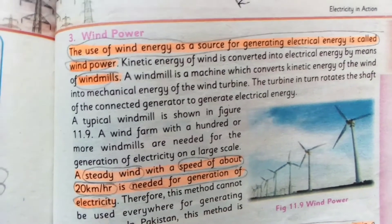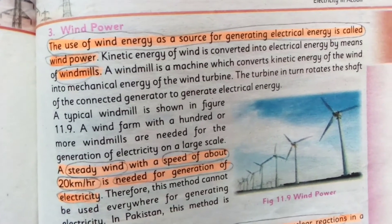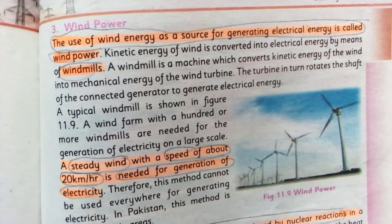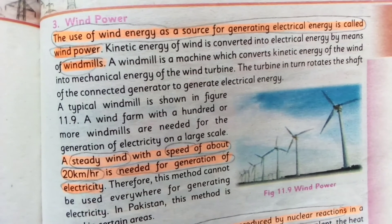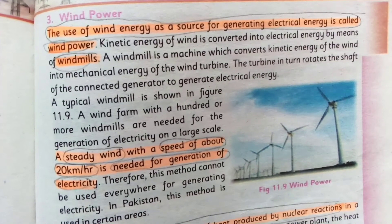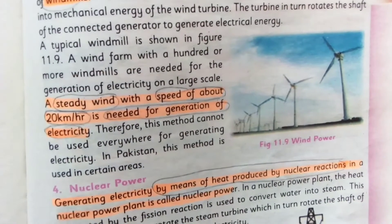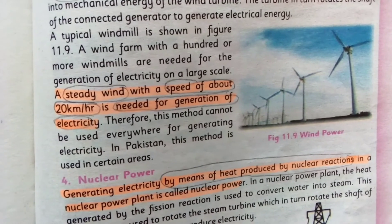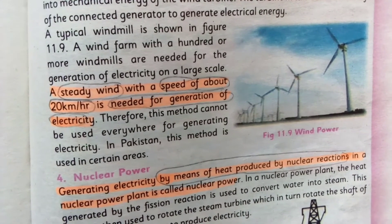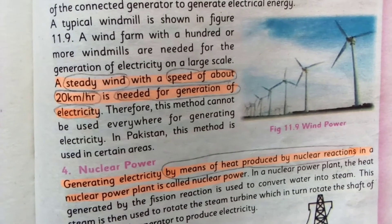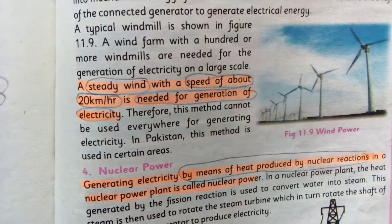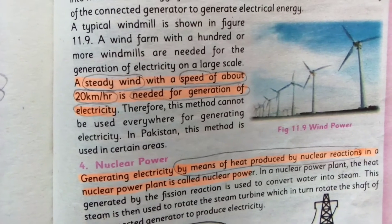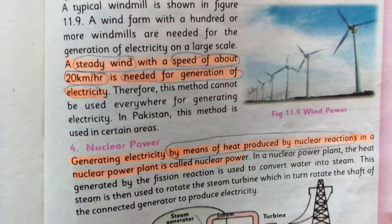The use of wind energy as a source for generating electrical energy is called wind power. The kinetic energy of wind is converted into electric energy by means of windmills. A steady wind with a speed of about 15 kilometers per hour is needed for generation of electricity.